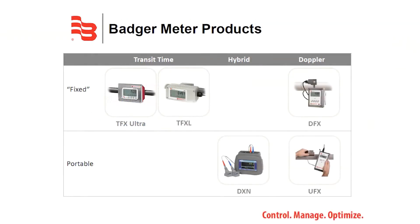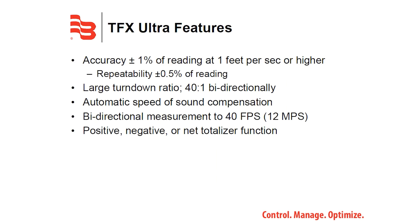Badger Meter manufactures a variety of ultrasonic flow meters. This video will focus on the TFX Ultra product line. The TFX Ultra provides an accuracy of plus or minus one percent of reading at one foot per second or higher.